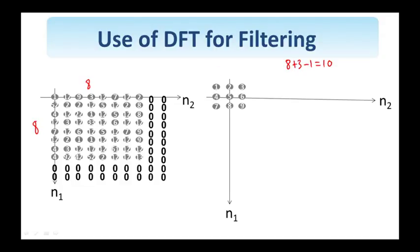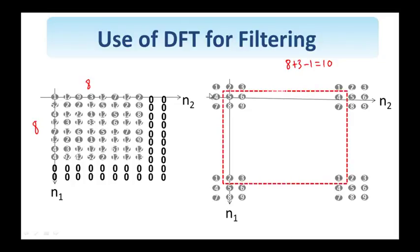When I talk about DFTs, the range of values are from 0 to N1 minus 1, 0 to N2 minus 1. So, I cannot accommodate the negative N1 and N2 values of this signal.